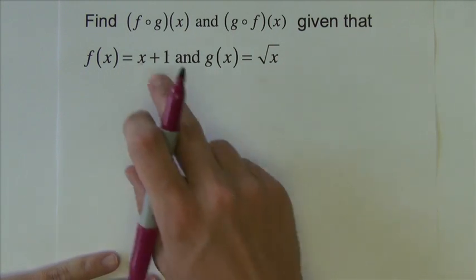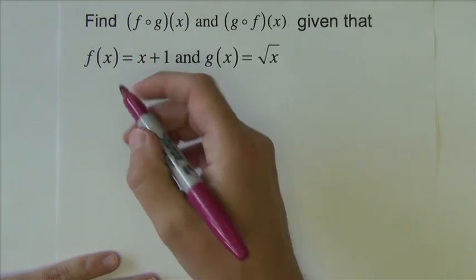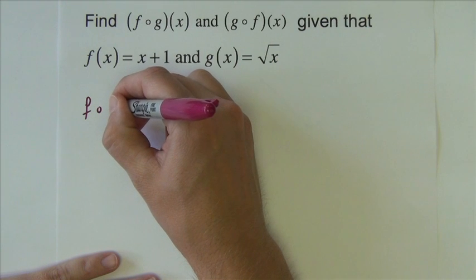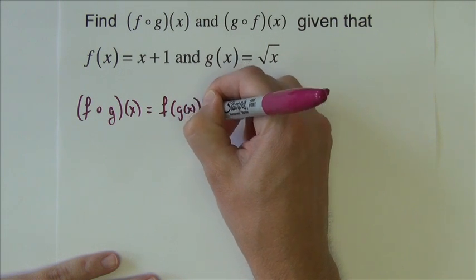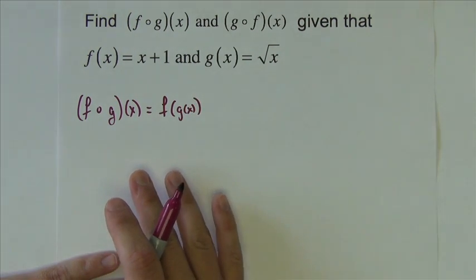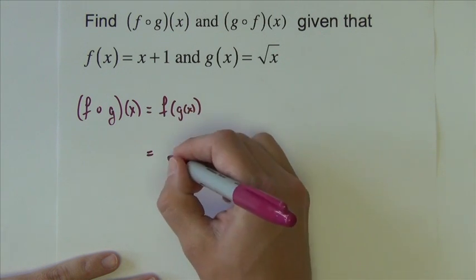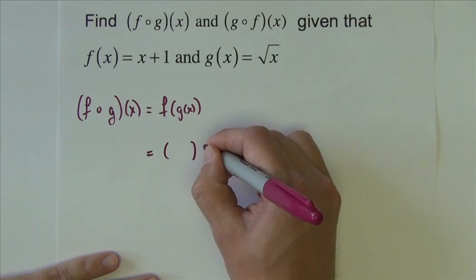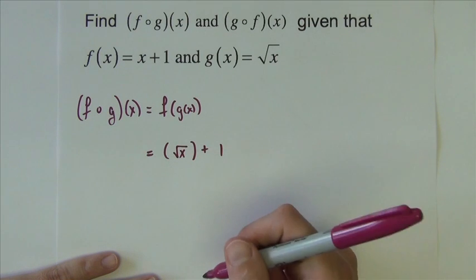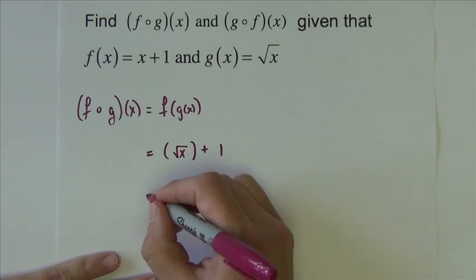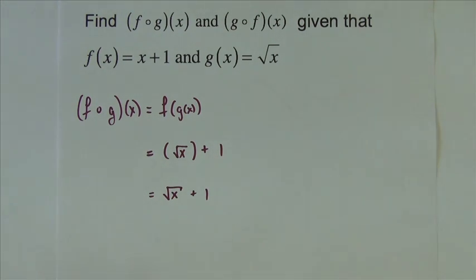Same directions on this next slide. Find f of g of x and g of f of x given two functions. So, I start with the f of g of x. Or rewrite if you prefer f of g of x. Write it however it makes it easiest for you to see what to do correctly. So, this says the g function is inside the f. So, here's my f. x plus 1. And where the x was is going to go with the g. Square root of x. There's no like terms. There's no operation I can perform. So, really that is just the answer. Square root of x plus 1. That's not too bad.